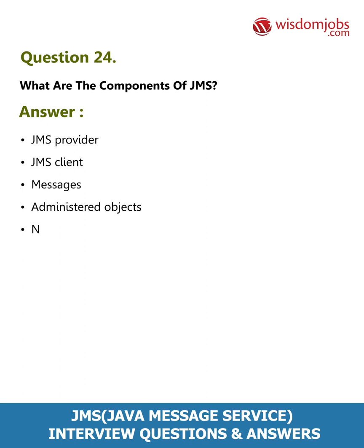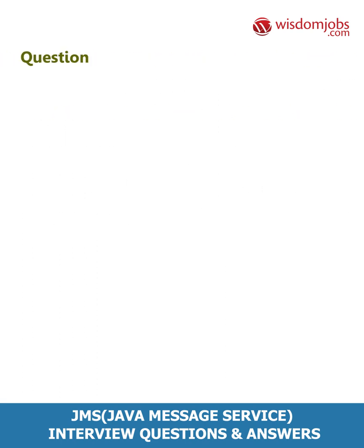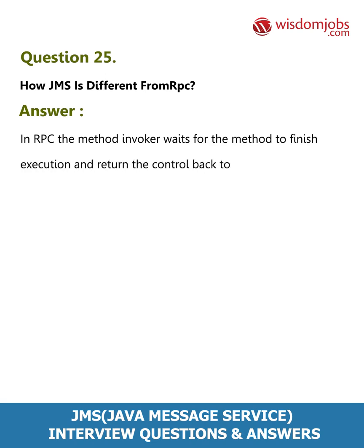Question 24: What are the components of JMS? Answer: JMS provider, JMS client, messages, administered objects, and native clients. Question 25: How is JMS different from RPC? Answer: In RPC, the method invoker waits for the method to finish execution and return control back to the invoker, thus it is completely synchronous in nature.